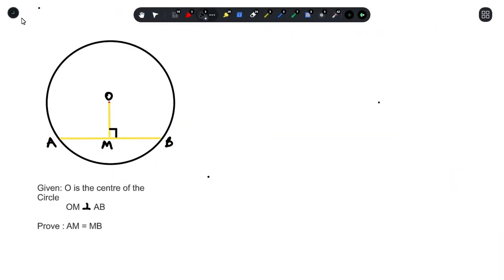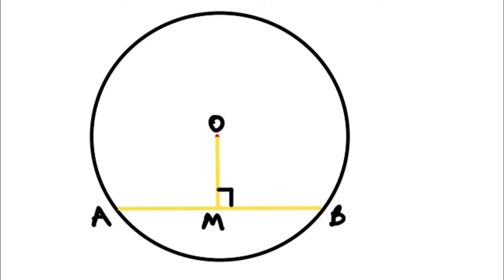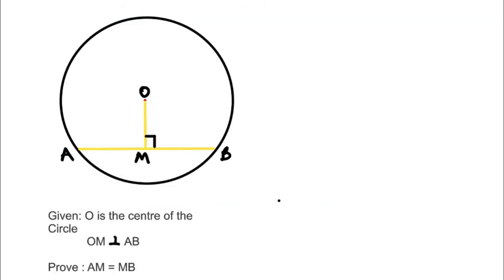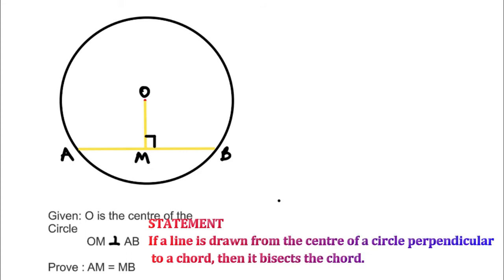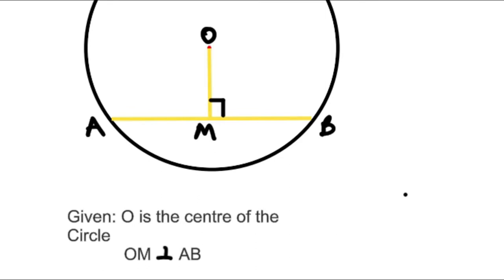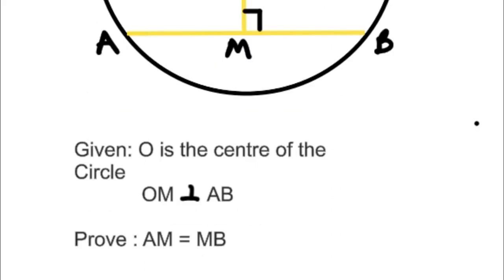The first theorem of Euclidean geometry states that if a line is drawn from the center of the circle perpendicular to the chord, then it bisects the chord. Now a couple of things that you'll be given: O is the center of the circle. In this particular theorem you're told that OM is perpendicular to AB, which makes that 90 degrees. You're required to prove that AM is equals to MB.